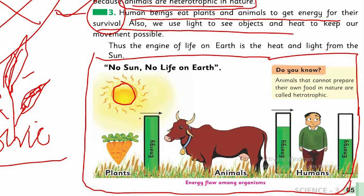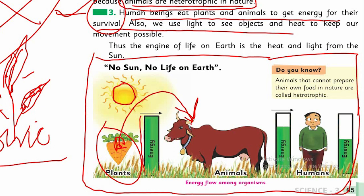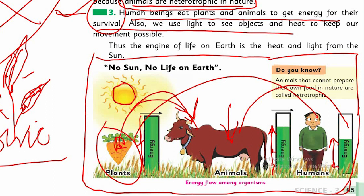Plants produce food using sunlight. Animals eat this food, but they receive less energy than plants. You can see in this diagram — animals get less energy from sunlight compared to plants. And humans, in comparison, use even less energy. Humans eat plants directly and also eat animals — a great blessing from Allah!